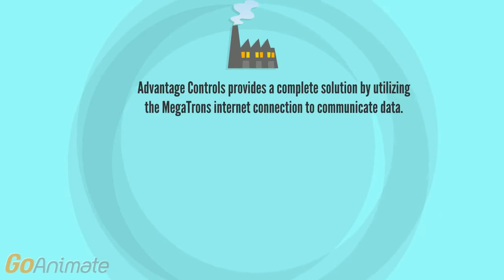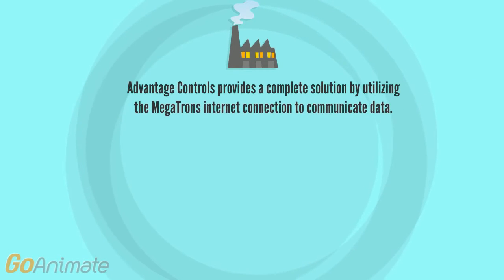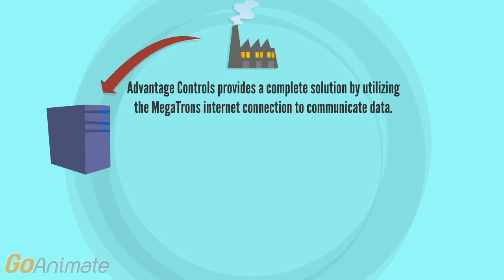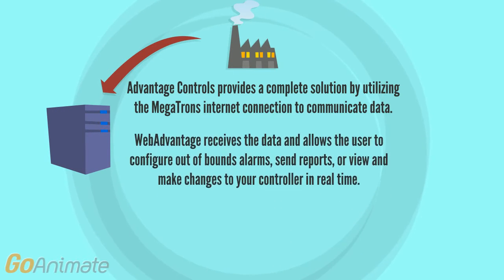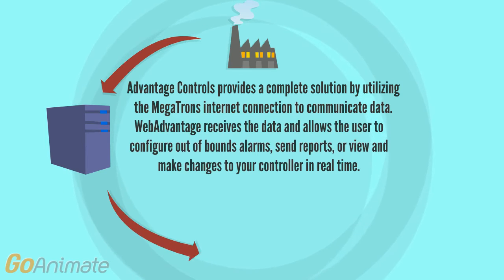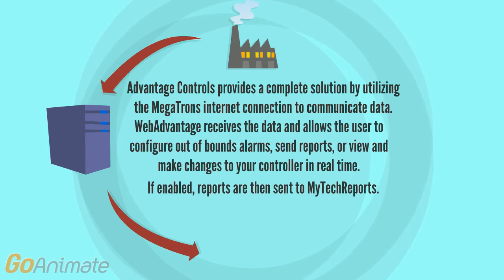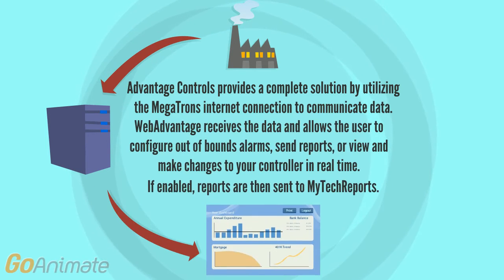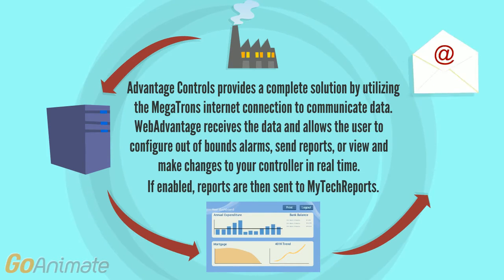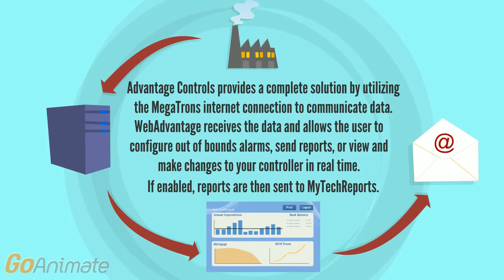Advantage Controls provides a complete solution by utilizing the Megatron's internet connection to communicate data. WebAdvantage receives the data and allows the user to configure out-of-bounds alarms, send reports, or view and make changes to your controller in real time.